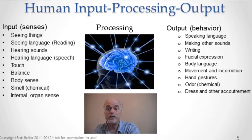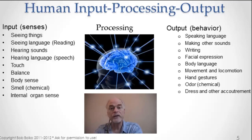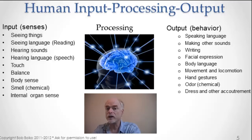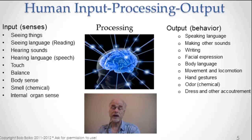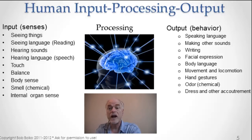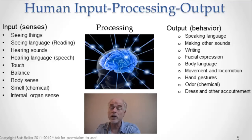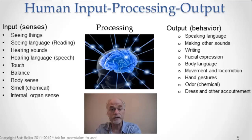Now let's dive into each of the three categories, starting with input. The natural way to think of this is the five senses, but I want to be a bit more specific. First, you can see things — you can see objects, judge distances to those objects, judge the solidity of objects, all that kind of stuff about seeing objects. But specifically, you can also see language: written language, and that's input as well. We get lots and lots of input that way — every time you read, you're seeing language.